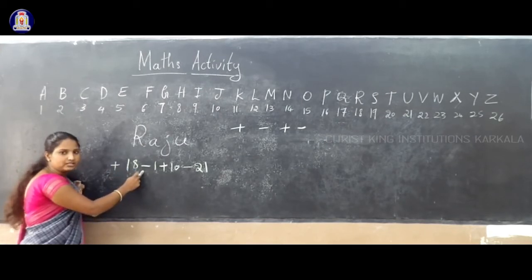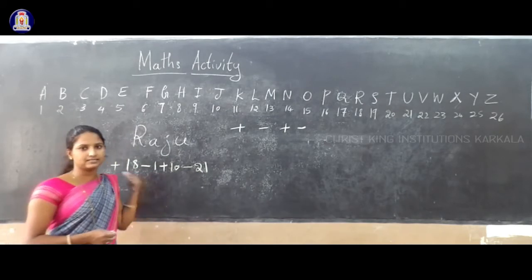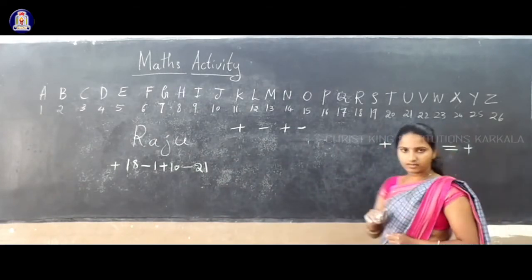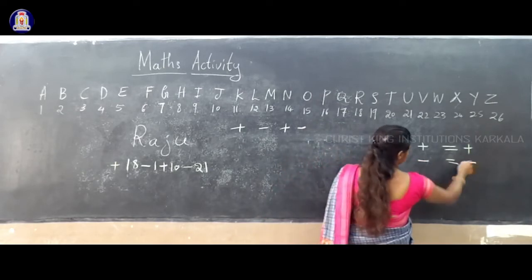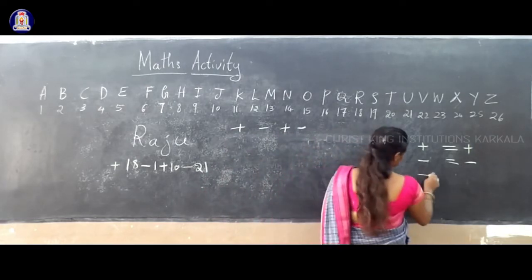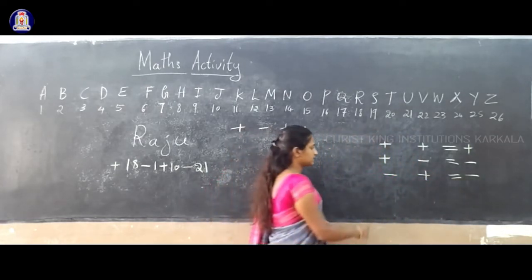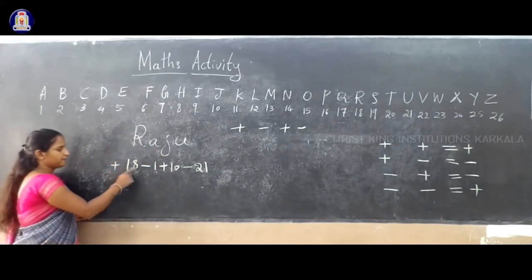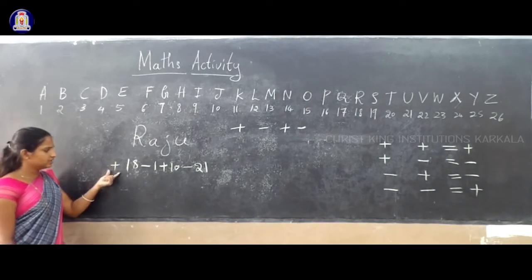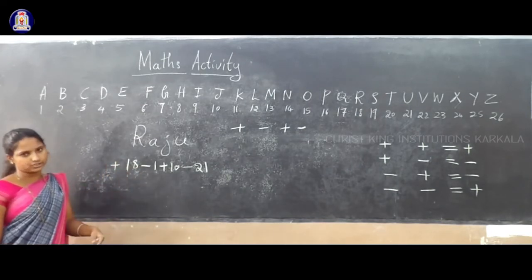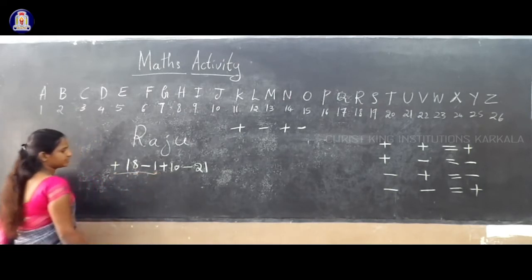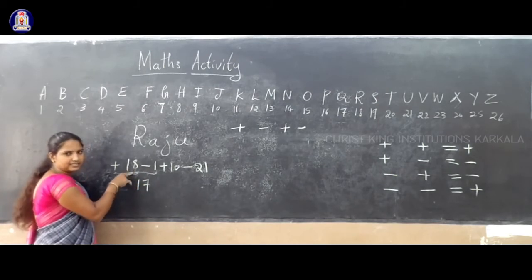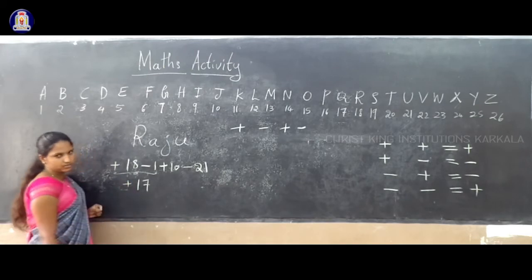Different sign means subtraction. So plus 18 minus 1: 18 minus 1 is 17. Which is greater? 18 is greater, so that sign is plus. So plus 17. Remaining two integers — plus 10 and minus 21. Different sign means subtraction: 21 minus 10 is 11. Greater number is 21, that sign is minus. So minus 11.